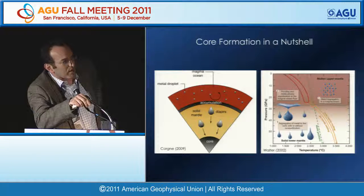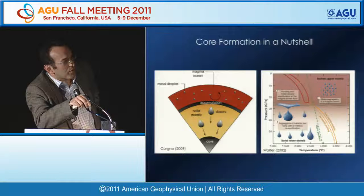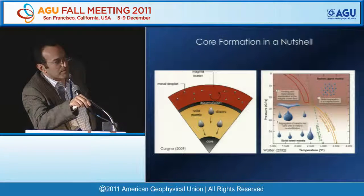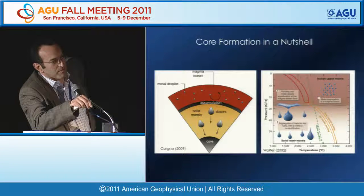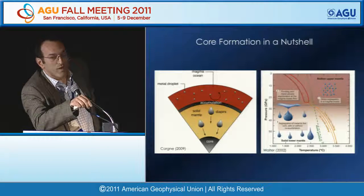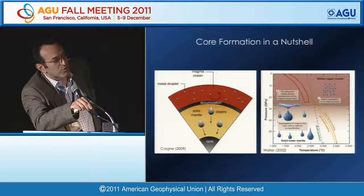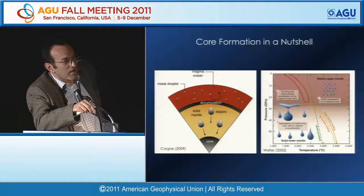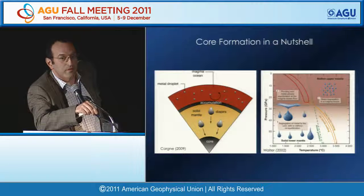In a nutshell: as the Earth accreted, metal was stripped from the magma ocean and coalesced by density-driven processes to form diapirs and ultimately the core. As the core was stripped from the mantle, it recorded the chemical equilibrium at the stages where core and mantle were in equilibrium. The better you know the mantle—the better you know the imprint of core formation on the mantle—the better you know the core.